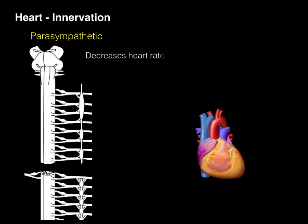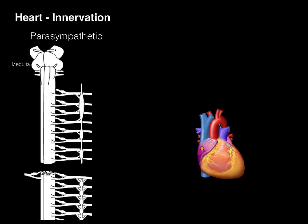Now let's take a look at the parasympathetic innervation of the heart. Its function is the opposite — it decreases heart rate and decreases the force of contraction. All parasympathetics arise between the brainstem and sacral cord. Specifically with the heart, it's going to be the medulla oblongata, where that preganglionic parasympathetic neuron arises from the dorsal vagal nucleus, exits to go to the heart, and synapses with an intramural ganglion. Then the postganglionic parasympathetic neuron within the wall of the heart influences cardiac muscle.